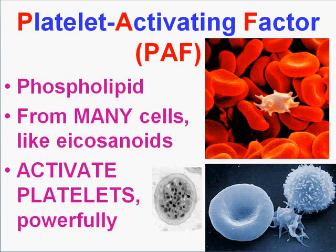What does PAF do? It activates platelets. PAF is produced in response to specific stimuli by a variety of cell types, including neutrophils, basophils, platelets, and endothelial cells. The end result is a very powerful stimulator of platelets for both coagulation and the inflammation saga as well.